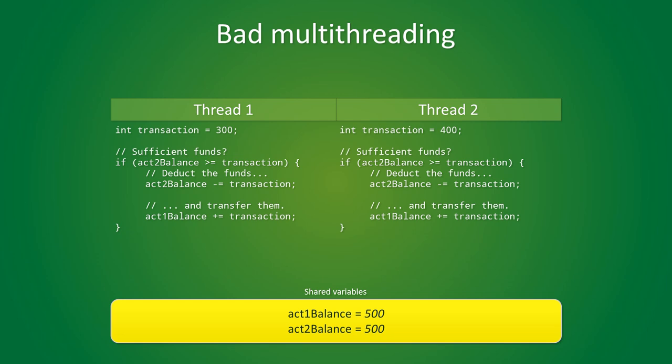A bank is about to execute two money transactions. On thread 1, a transaction is being made from account 2 to account 1 for $300. On thread 2, a transaction is made for $400 from account 2 to account 1. If there are insufficient funds available, the transaction should not be allowed to take place, hence the if statement. Moving through the code of thread 1, we will detect sufficient funds, deduct the funds from account 2 and transfer them to account 1.